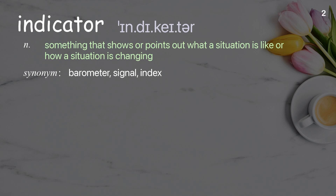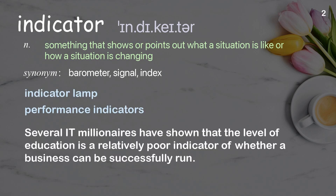Indicator: something that shows or points out what a situation is like or how a situation is changing. Examples: indicator lamp, performance indicators. Several IT millionaires have shown that the level of education is a relatively poor indicator of whether a business can be successfully run.